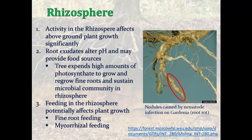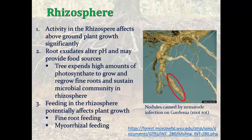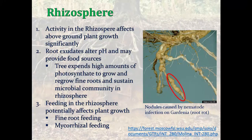Root exudates are altering pH, trying to find other food sources, trying to make elements available to the plant. This creates a really specialized area where other microbes are interacting with the soil and plants as well, such as nematodes feeding on roots or mycorrhizal feeding. This is where that symbiotic relationship forms between bacteria and fungi and plant roots.